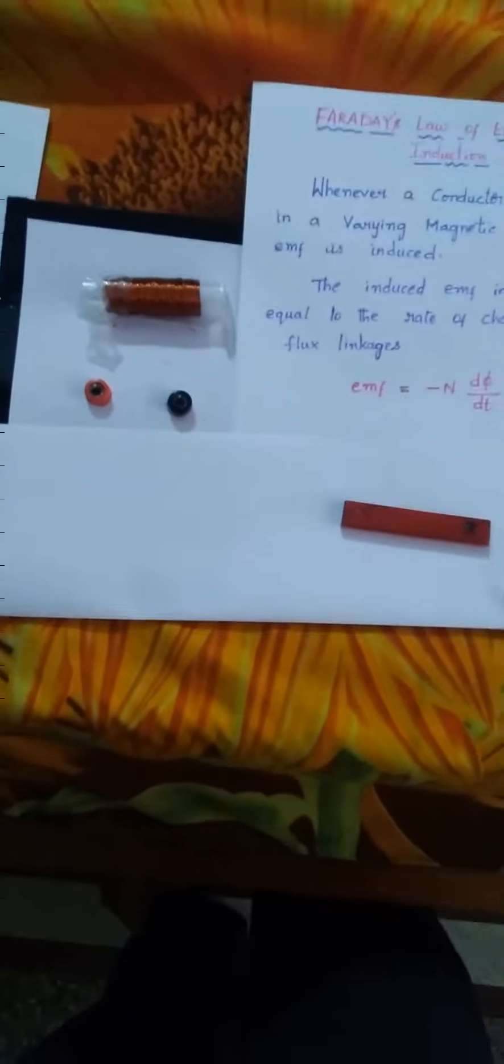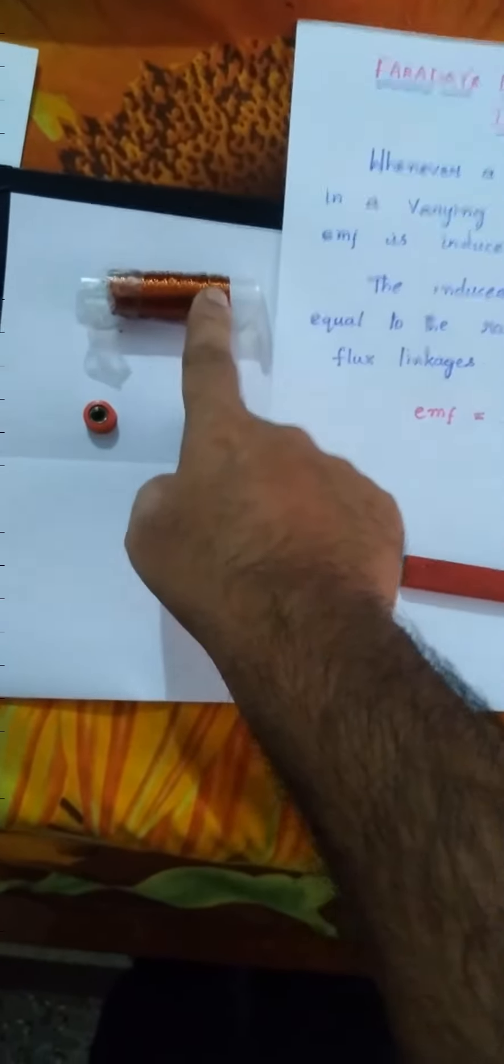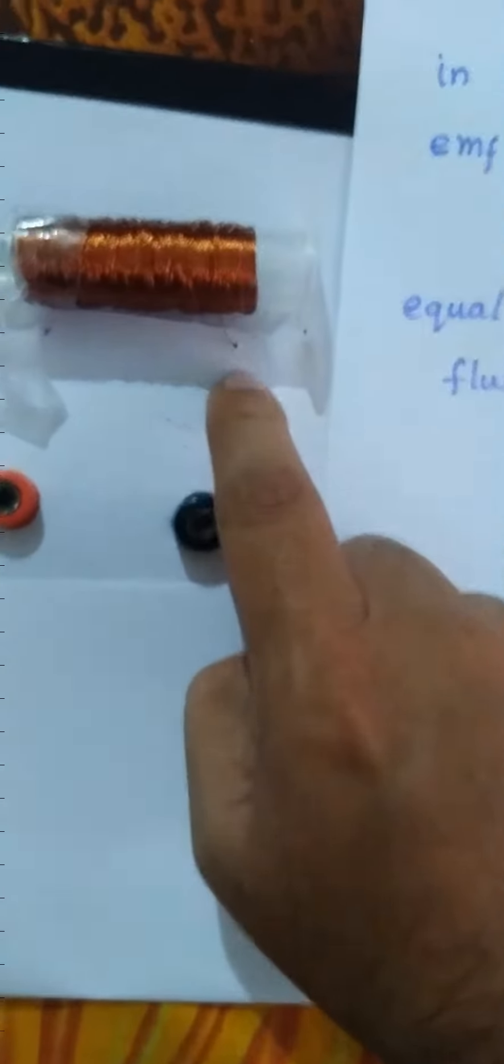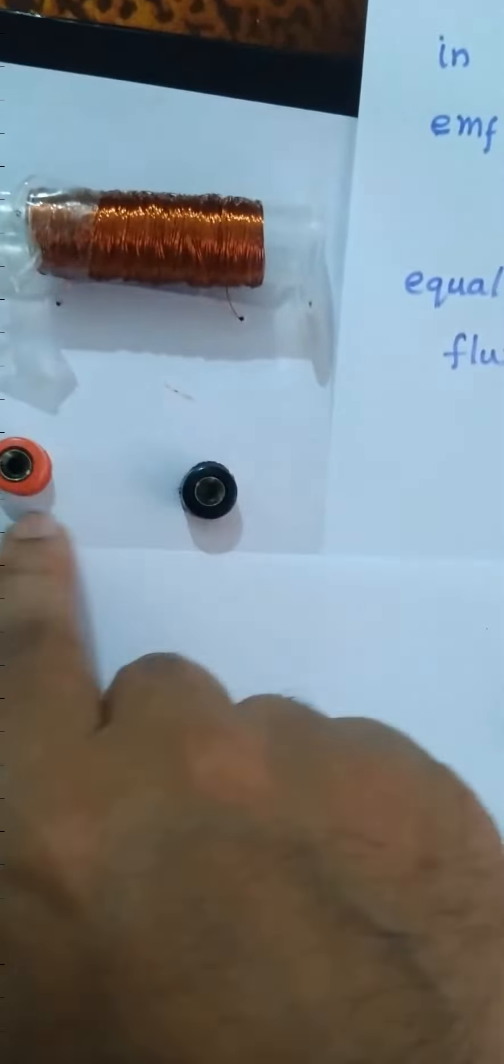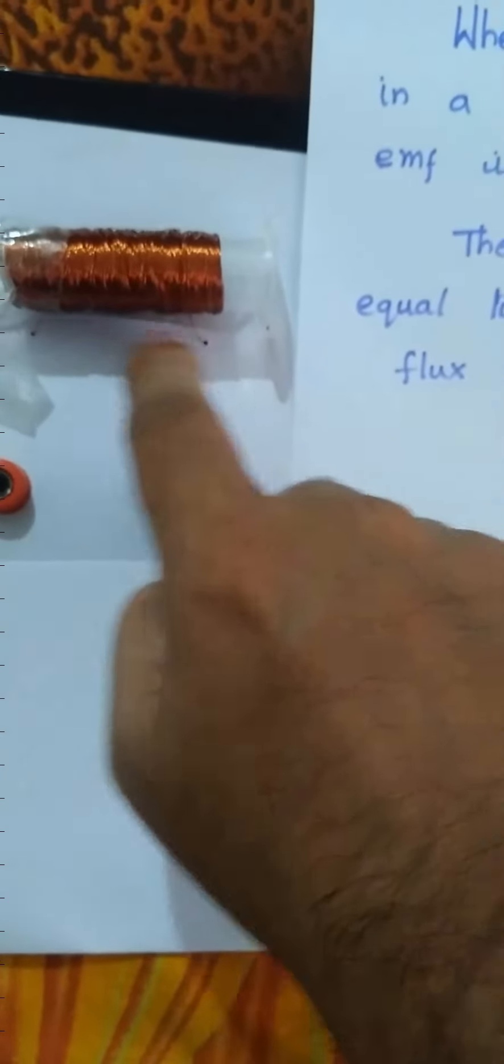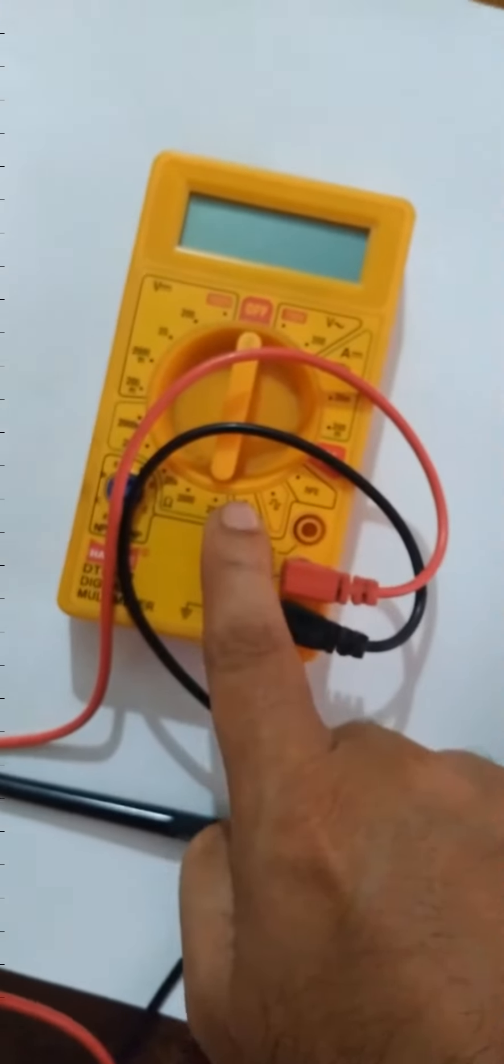To perform this experiment, we need a 24-gauge coil with 100 turns. The ends of these coils are internally connected to the connectors. And bar magnets - this is north pole, this is south pole. And another instrument is digital multimeter.